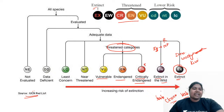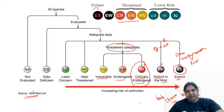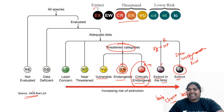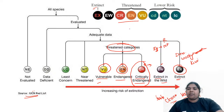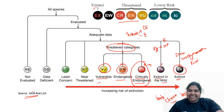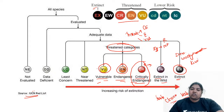Coming back to the question — who is most prone to extinction? That is going to be your critically endangered species, followed by normally endangered species, and finally the vulnerable species. But all three — critically endangered, endangered, and vulnerable — are coming under the threatened category.